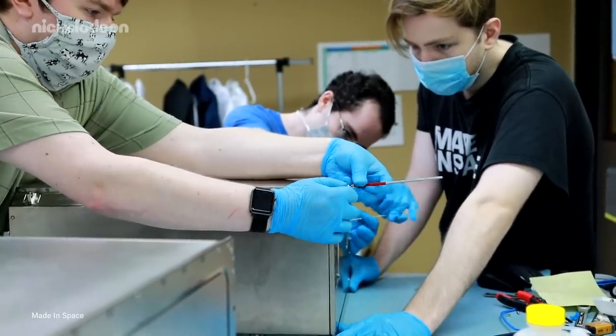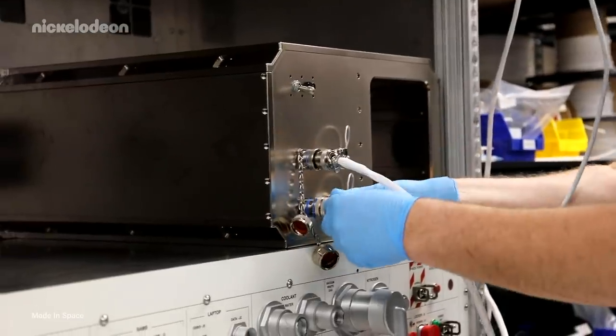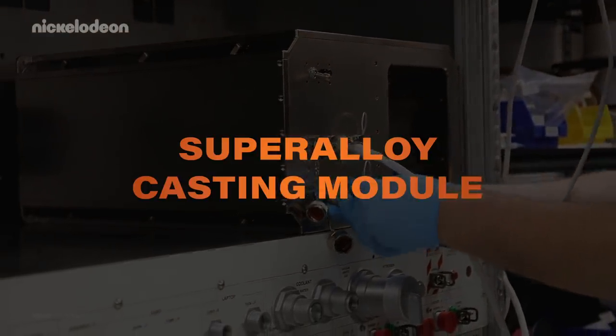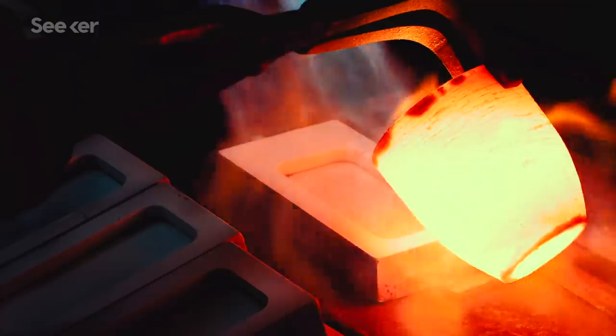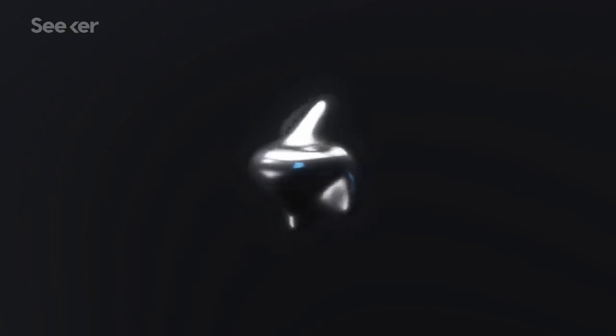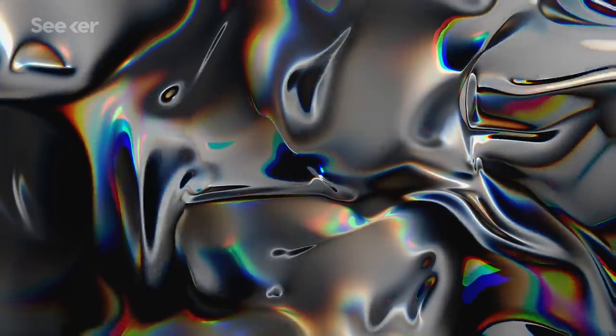And then the final payload that we're going to be setting up is actually very early next year called Super Alloy Casting Module. And this Super Alloy Casting Facility is taking a look at being able to heat treat, remelt, and solidify different materials on orbit, specifically high-grade temperature alloys.